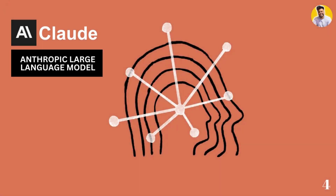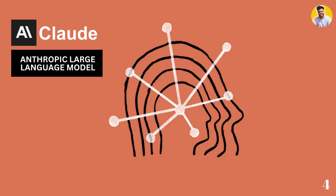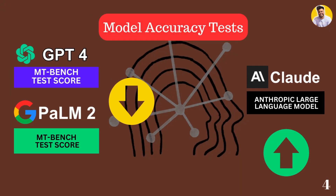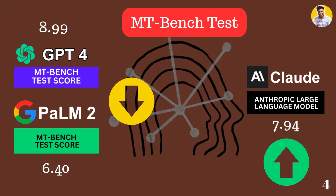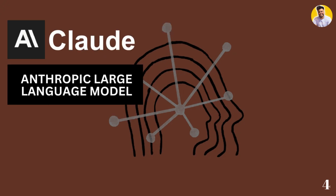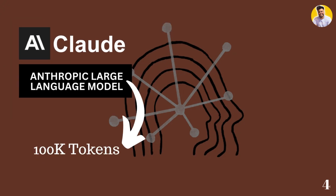Our next large language model is Claude. Claude version 1 is a powerful large language model developed by Anthropic, which is backed by Google. It is co-founded by former OpenAI employees and is built to be a powerful, honest, and harmless AI assistant. In multiple benchmark tests, Claude version 1 has shown great capabilities — performing better than PaLM-2 and scoring 7.94 in the MT-Bench test, whereas GPT-4 scores 8.99. It can accept up to 100,000 tokens in context length.